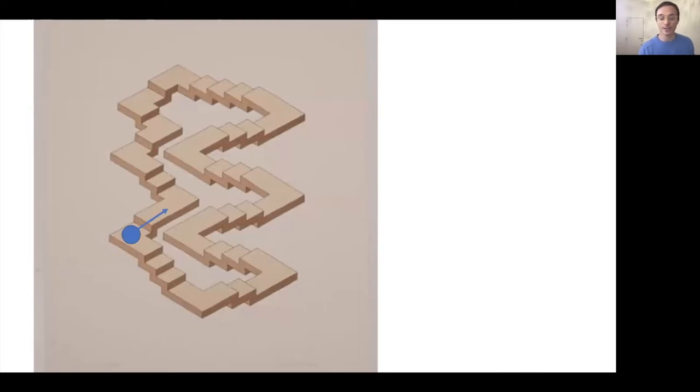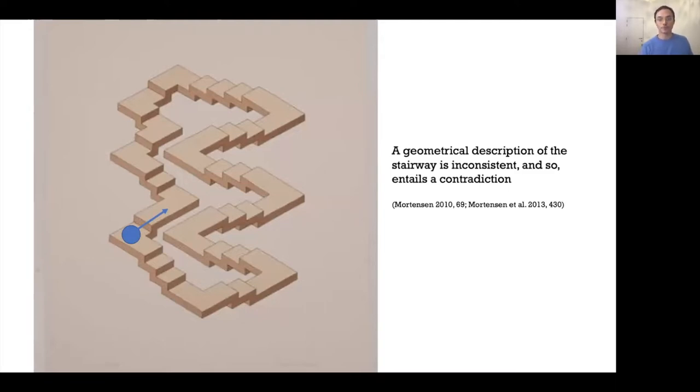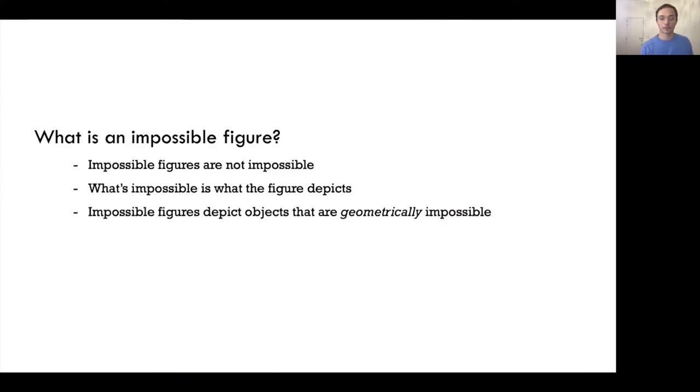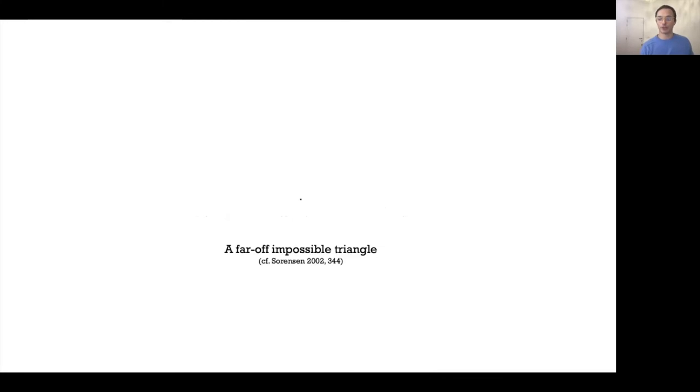That there is something here to be explained, something distinctive about impossible figures, is strongly suggested by the following. Consider Escher. Only three of Escher's 448 lithographs include impossible figures, yet they're among his best known and best loved works. Since they're not otherwise visually remarkable, at least as far as Escher's go, what explains this is presumably their inclusion of impossible figures. Which again really forces us to deal with the question: what's the appeal? Strangely, this topic seems to have attracted virtually no attention at all.